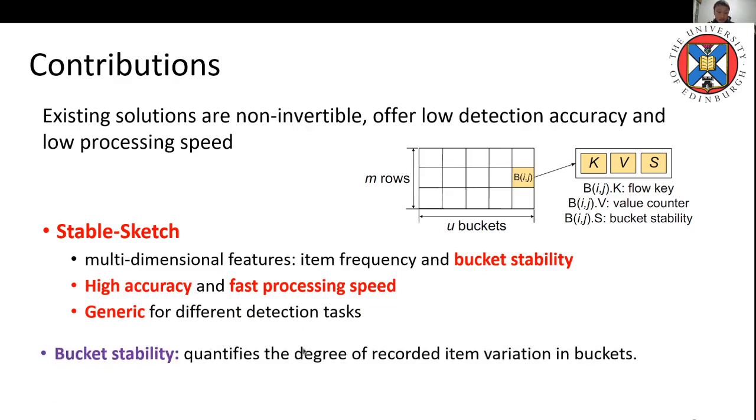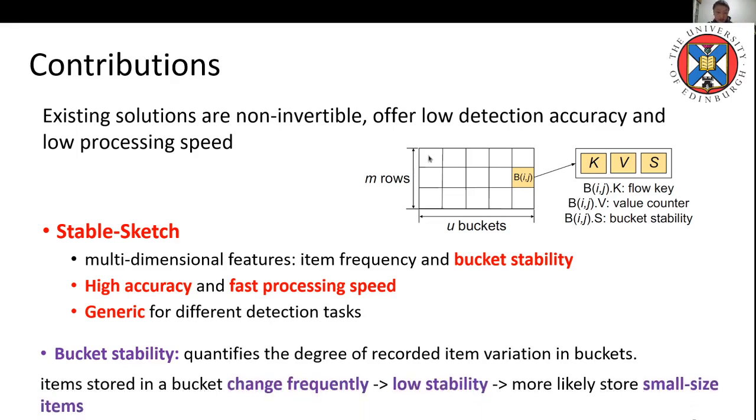The bucket stability means the degree of recorded item variation in buckets. If the items tracked in the buckets changes a lot, it means the bucket has low stability, so it indicates this bucket is more likely to store non-heavy items, so it can evict them easily and provide more protection to heavy items.